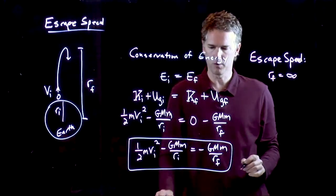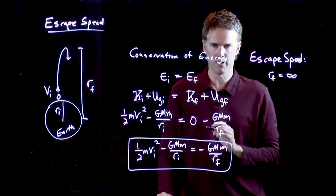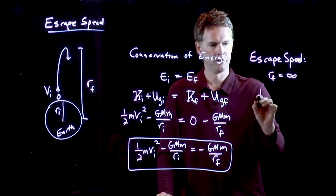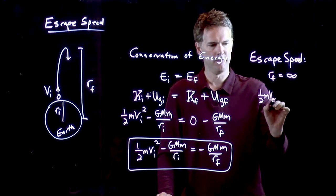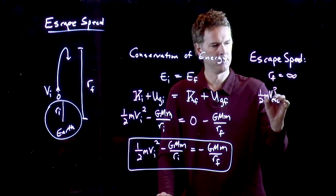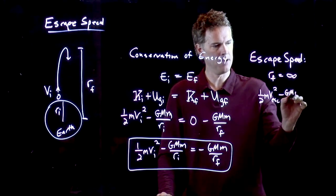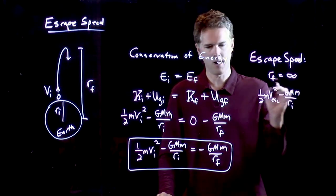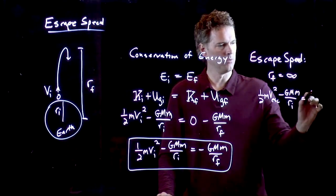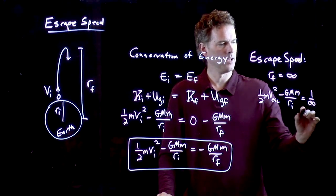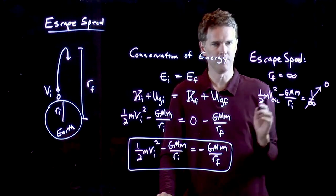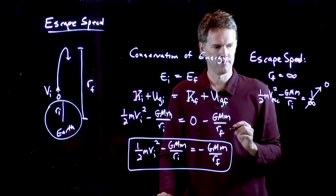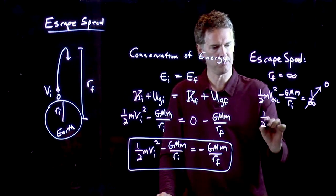If I rewrite this equation, this whole term over here goes away. So I get one half M V escape squared minus GMM over RI, equals one over infinity. And we know that one over infinity is zero. And now we can just solve this for the escape speed.